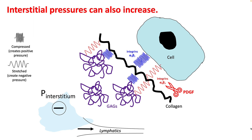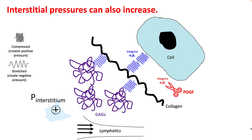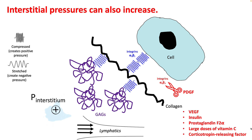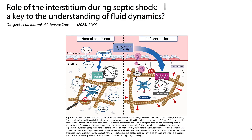Interstitial pressure can also rise when you manipulate integrin alpha-Vb3, and this can happen with molecules like platelet-derived growth factor. Compromising alpha-Vb3 integrin raises interstitial pressure and thereby reduces edema. Other molecules such as VEGF, insulin, vitamin C, and corticotropin-releasing factor have been shown to manipulate alpha-Vb3 integrin, thereby increasing interstitial pressure. Inhibition of lymphatic pumping during inflammation will be discussed in a separate lecture. This is a very good review article about the role of the interstitium during septic shock — I encourage you to go through it.